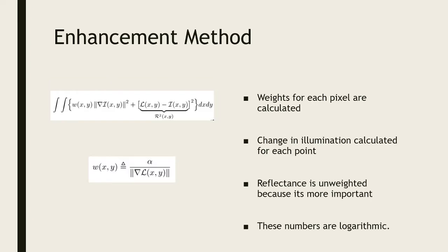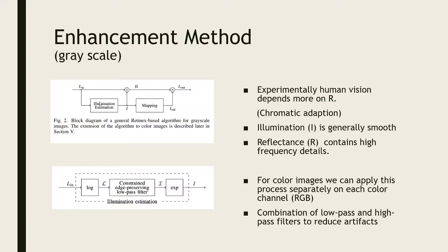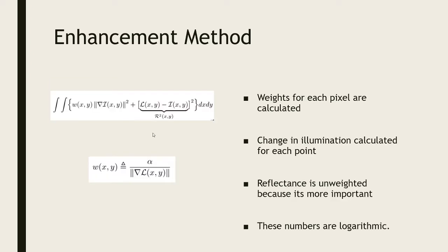Here's the math: a double integral over the whole image in both dimensions computes the new L as the I part plus the R part. You might wonder why it's addition when earlier we said multiplication — this is because a log transform turns multiplications into additions. The weighted term in the equation is what calculates the new I, transforming the old I into a new I. Most of that work is done by this weight.